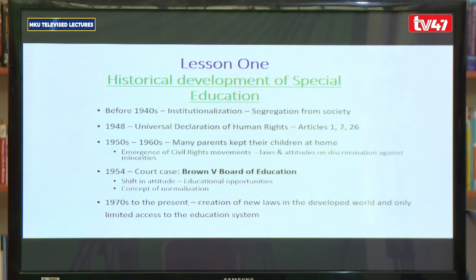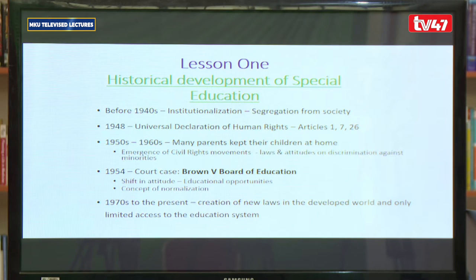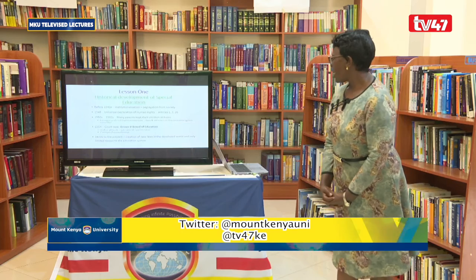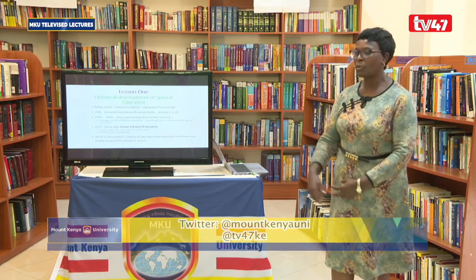In 1948, the Universal Declaration of Human Rights came about. Article 1, Article 7, and Article 26 look at everybody as equal, everybody having a right to be treated the same. Especially Article 7 talks about non-discrimination, and Article 26 talks about the right to education for every human being. After 1948, when the 1950s and 1960s came about, most parents realized that their children should not be where they were because they needed to be treated just like any other human being, and therefore chose to keep their children at home.